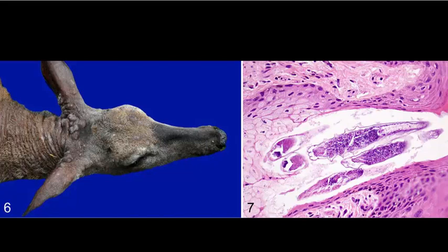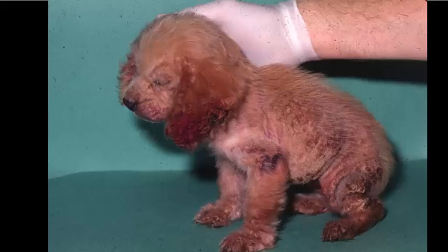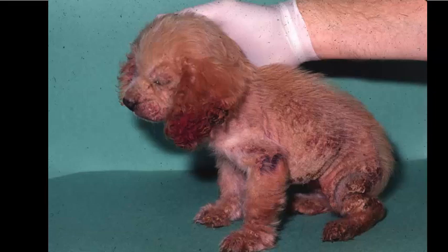Let's move on from demodectic mange — alopecic, non-pruritic, and host-specific — to the pruritic sarcoptic mange, which can jump hosts and is transmissible. Sarcoptic mites represent a different type of mite seen in many animal species. They live in the epidermis and cause tremendous crusting. The presence of their secretions, eggs, and excreta causes tremendous pruritus as a result of a combined type 1 and type 4 hypersensitivity. So these animals often show tremendous pruritus.